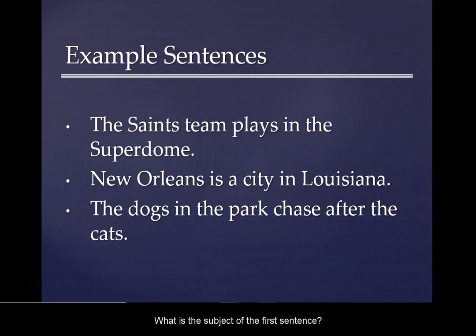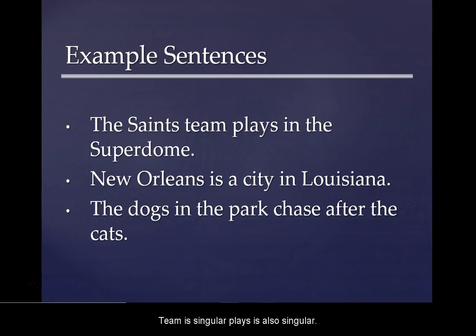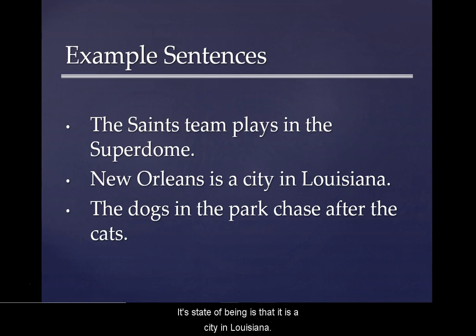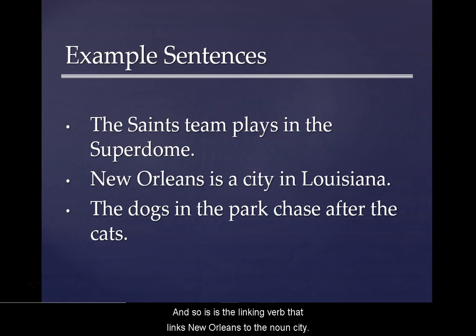Let's look. What is the subject of the first sentence? The subject is team. What is the team doing? The team plays. Team is singular, and plays is also singular. New Orleans is a city in Louisiana — its subject is New Orleans, and its state of being is that it is a city in Louisiana. So 'is' is the linking verb that links New Orleans to the noun city.